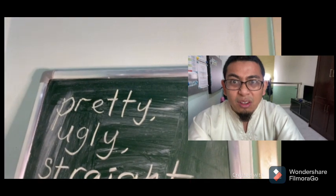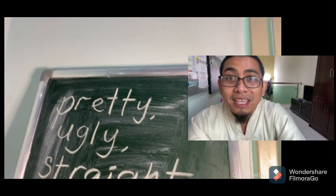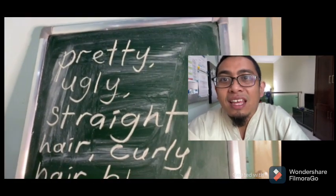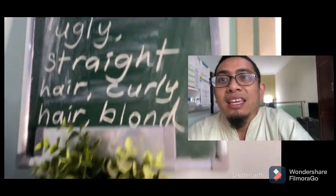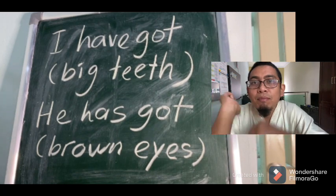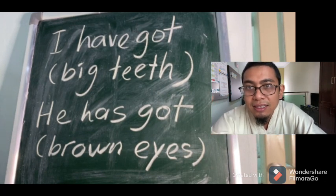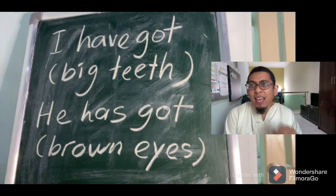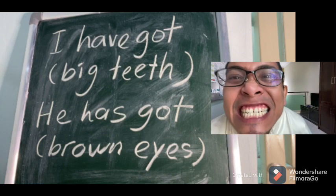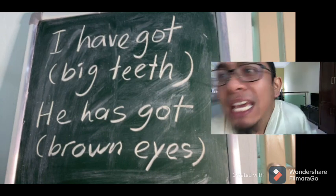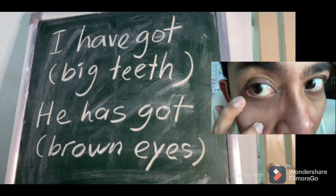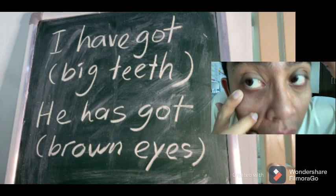For today we are going to learn about describing appearance, such as pretty, ugly, straight hair, curly hair, and blonde hair. Example sentences we are going to use today: I have got big teeth, and he has got brown eyes.